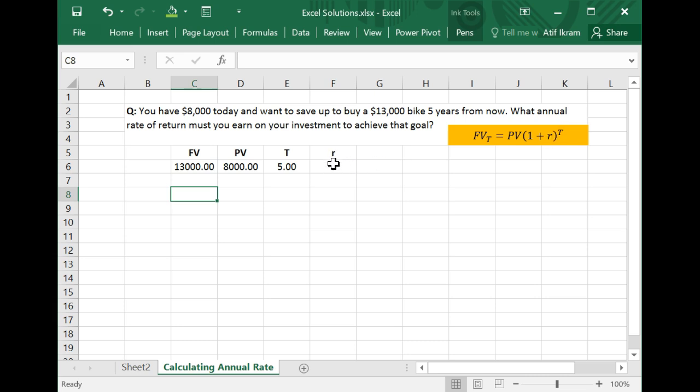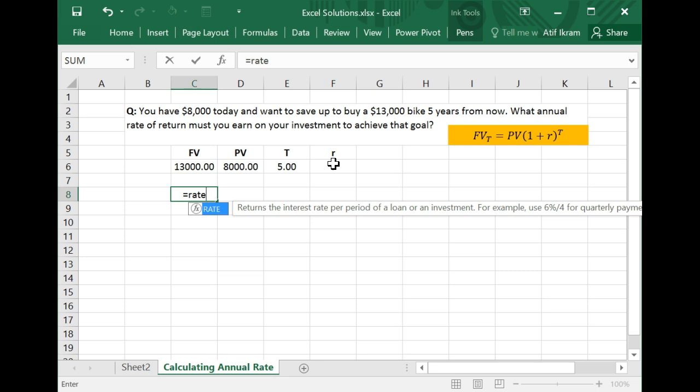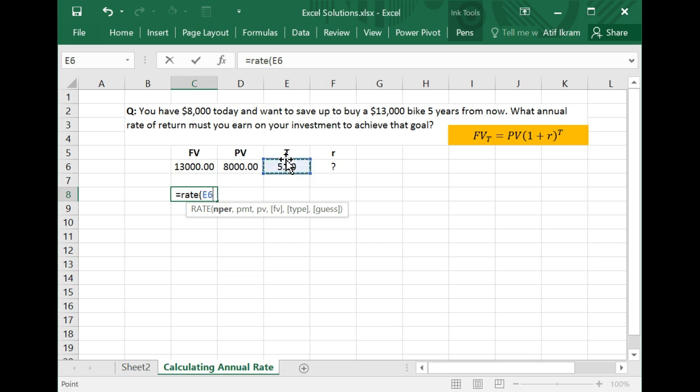And so it turns out that in Excel, you have this function called rate. So equal to and then rate. And then when you open the parentheses, it asks you how many time periods it is that you're going out into the future. You say, well, five. And so you give the cell reference to this number right here. You could have entered five manually as well. But usually, it's considered good practice to have these inputs laid out separately. So you can do this as well. You just give the cell reference five.